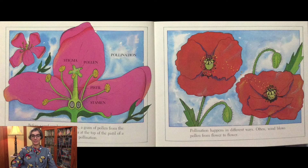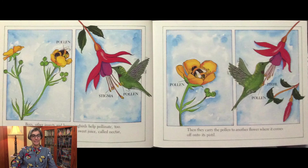Pollination happens in different ways. Often, wind blows pollen from flower to flower. Bees, other insects, and hummingbirds help pollinate too. While they visit flowers for their sweet juice called nectar, pollen rubs onto their bodies. Then they carry the pollen to another flower where it comes off onto its pistil.